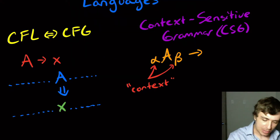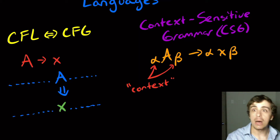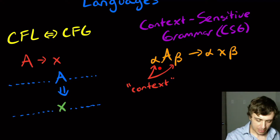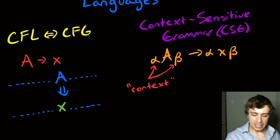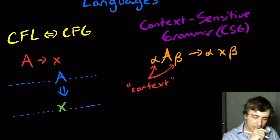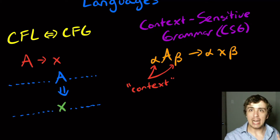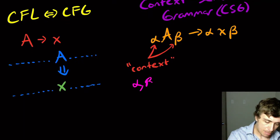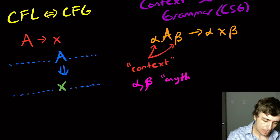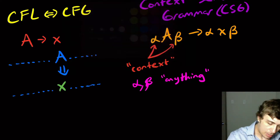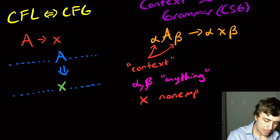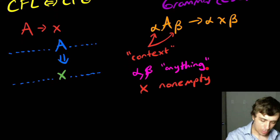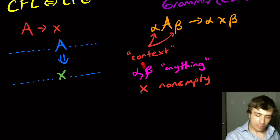So whatever A is replaced with — let's call it X — we have to have alpha and beta on both sides of that too. The context is preserved; we can only change A to X under this particular condition. There are different notions of what alpha and beta are, but the most common one is where they can be anything — any mix of terminals and variables. We also require that X be non-empty.